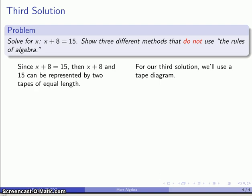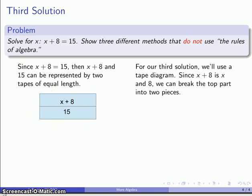So because x plus 8 is equal to 15, then x plus 8 and 15 can be represented by 2 tapes of equal length. So I'll go ahead and draw that. There's my x plus 8 tape here. Here's my 15 tape, also having exactly the same length. And the important thing to note here is this x plus 8 tape is actually x together with 8.